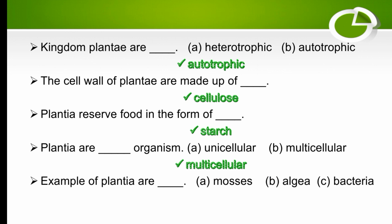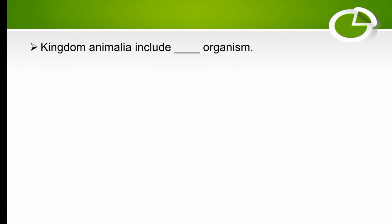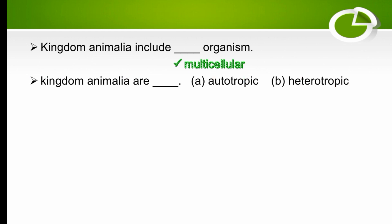Examples of Plantae include mosses. Kingdom Animalia also includes multicellular organisms. Kingdom Animalia are heterotrophic — they cannot prepare their own food.